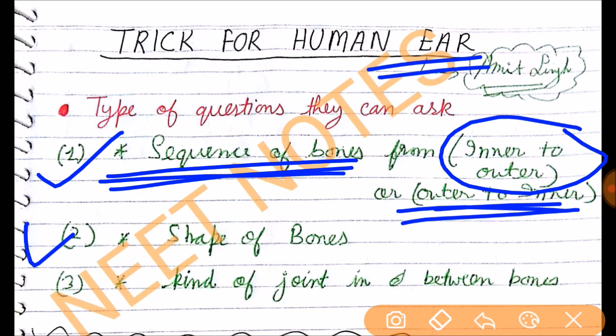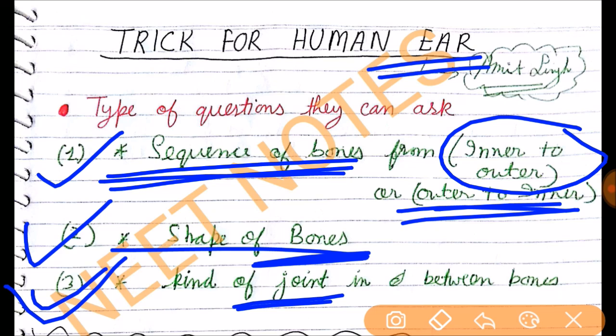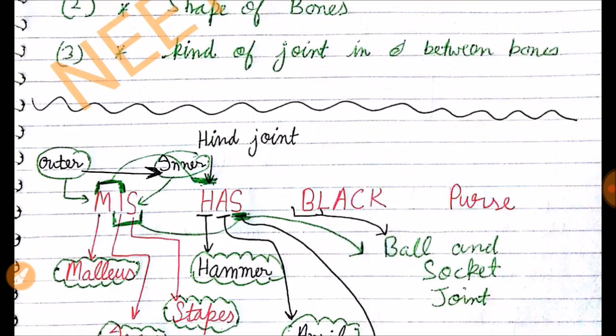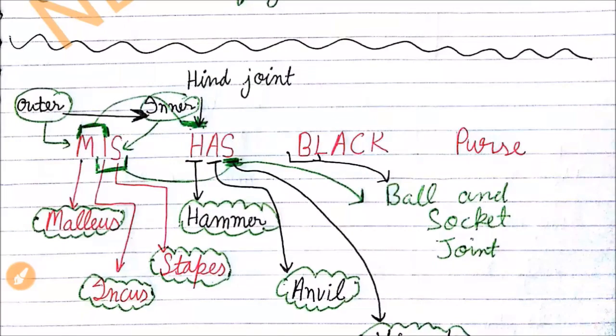They can ask from inner to outer side or from outer to inner side. This is the first type of question. Now let's see second type of question. In second type of question they can ask shape of bones. And the third type of question which they can ask is what kind of joint is present between these bones.